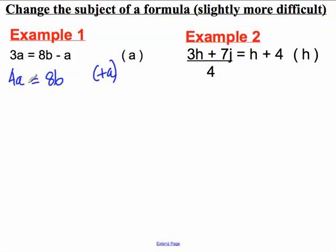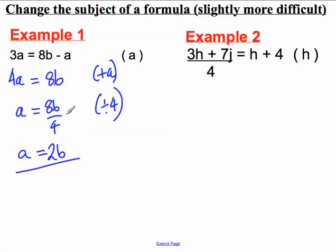I don't want 4a's, I want a as the subject. So I could divide both sides by 4 and I would get a is equal to 8b divided by 4. 8b divided by 4 is simply 2b. So a is equal to 2b and a is the subject of this formula.